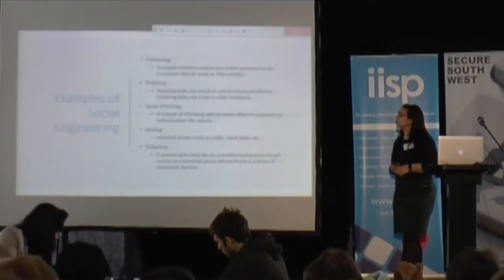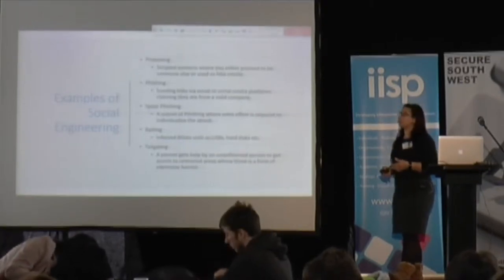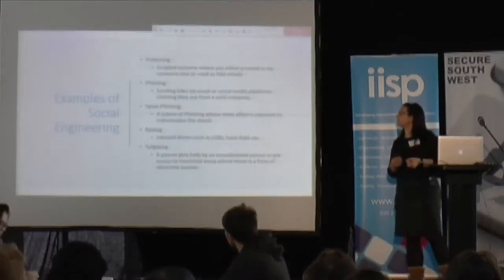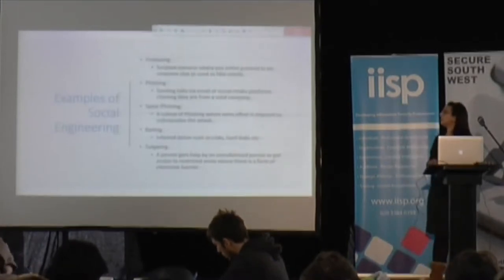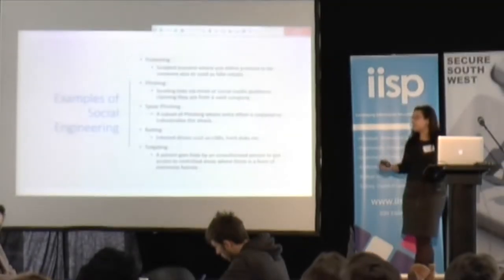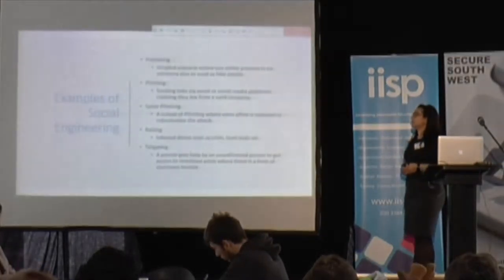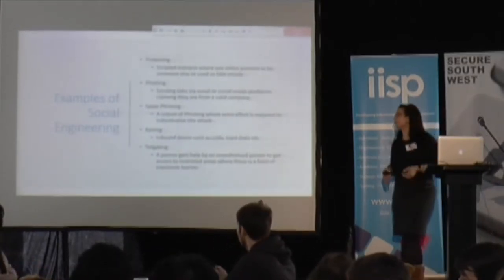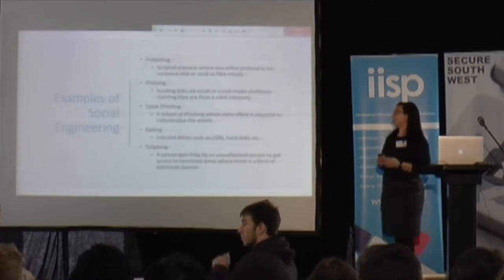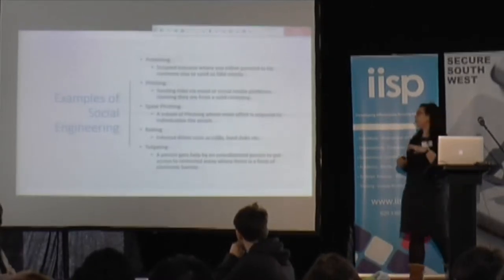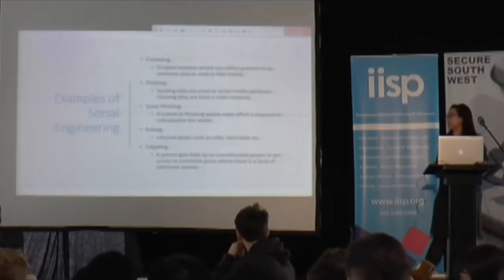Some examples of social engineering include pretexting, where they give you a scripted scenario and pretend to be someone else to get information from you. Phishing, where they send links via emails or social media platforms claiming to be from a valid company, trying to convince you to click certain links or share certain information. Spear phishing, where extra effort is required to attack a specific individual. Baiting, which happens through infected USBs. And tailgating, where someone tries to gain access to restricted areas or devices with help from an authorised person.